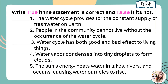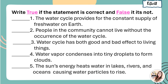Let's have a short review. Please bring out your notebook and answer. Write true if the statement is correct and false if it is not. Check your answers. For number one, the water cycle provides for the constant supply of fresh water on Earth. The answer is true.